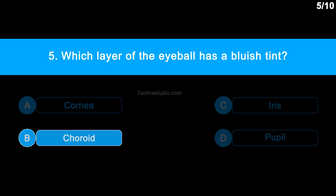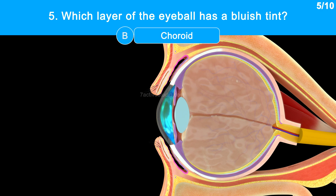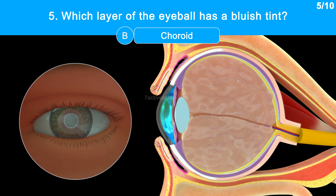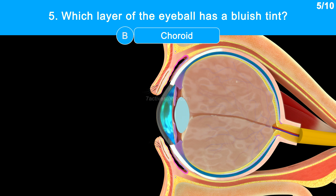The correct answer is option B, choroid. As previously noted, the cornea is transparent. The iris, which can be seen as the coloured part of the eye, while the pupil is an aperture. The choroid appears bluish.